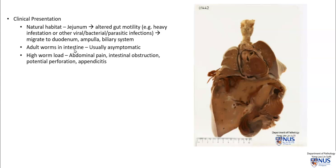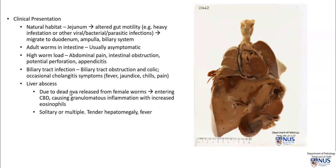The adult worms in the intestine are usually asymptomatic. However, if the worm load is very high, this can give rise to abdominal pain and intestinal obstruction — as you can see here potentially, because this is almost forming a mass within the lumen. They can also cause potential perforation and even appendicitis.